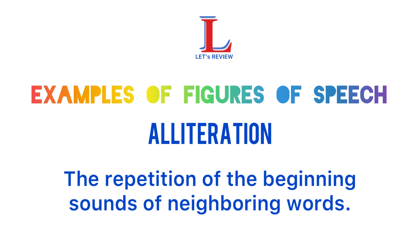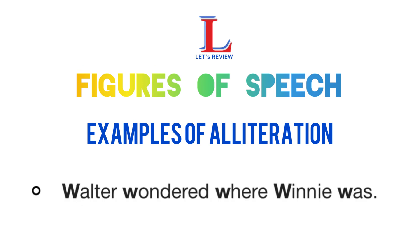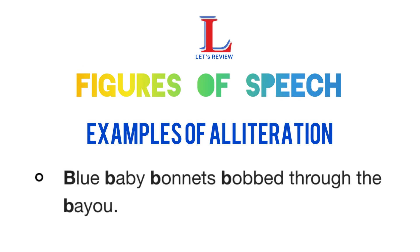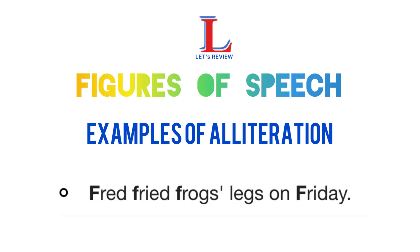Alliteration is the repetition of the beginning sounds of neighboring words. Examples of alliteration are: She sells seashells. Walter wondered where Winnie was. Blue baby bonnets bob through the bayou. Nick needed new notebooks. Fred fried frog's legs on Friday.